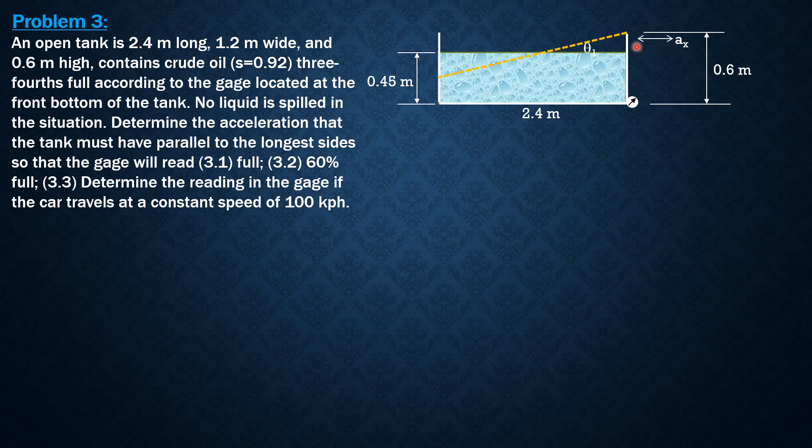The acceleration is negative, so that's the direction of acceleration, but in this case it should decelerate. The tank should decelerate so that this will be the resulting crude oil surface so that the gauge will read full. So again, tangent of theta 1 is Ax over G, where Ax is expected negative, so negative Ax over G.